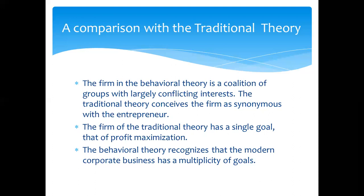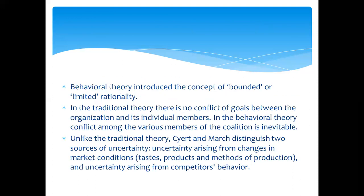Behavioural theory recognizes that the modern corporate business has a multiplicity of goals. Behavioural theory introduces the concept of bounded or limited rationality, whereas traditional theory assumes global rationality. Unlike traditional theory, Cyert and March distinguish two sources of uncertainty: one is uncertainty arising from changes in market conditions, and second is uncertainty arising from competitors' behaviour. With this, we end this discussion.